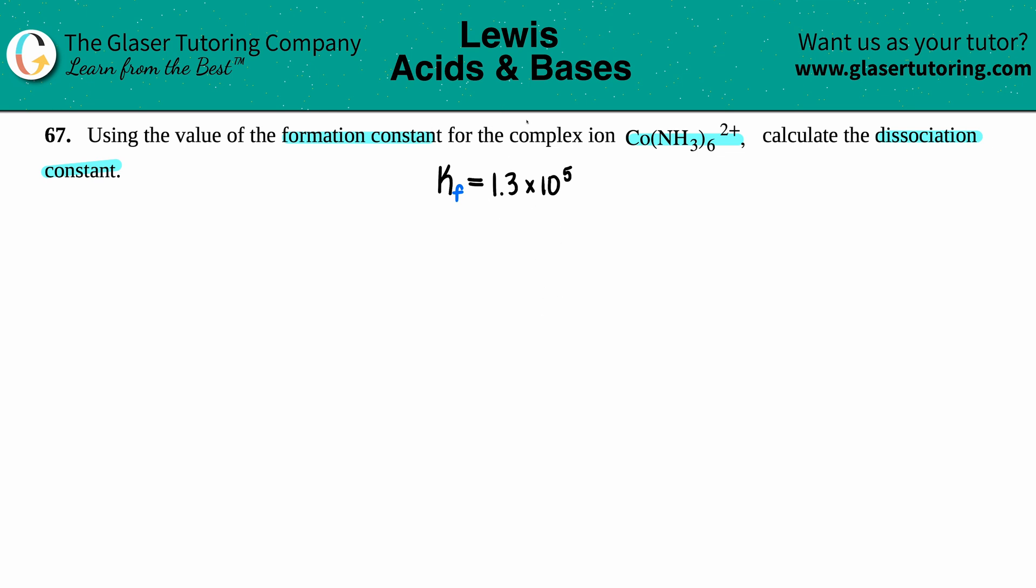That means that basically your cobalt ion plus the ammonia is going to form together to produce the complex ion. If we want to find the dissociation constant, just know that dissociation is the breakdown—you're dissociating it into its parts. Dissociation, especially when we're talking about complex ions, is the exact reverse of formation.